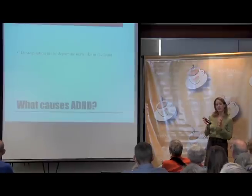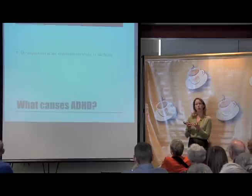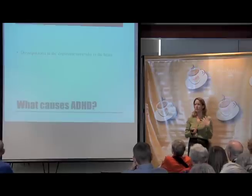But one thing that scientists all kind of agree on is there is some dysregulation of the dopamine network. Dopamine is a neurotransmitter in the brain, just like serotonin is — you might have heard about serotonin in terms of relating to depression. Dopamine is a chemical we use in the brain to communicate different things in different regions, and there seems to be something that's not quite right about that system, and it has a couple of implications.